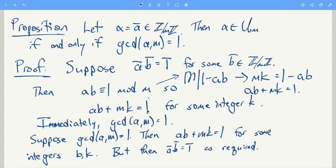Now if ab plus mk equals 1, then immediately the GCD of a and m has to be 1, because any common divisor of a and m must divide 1.